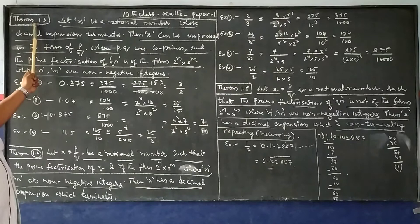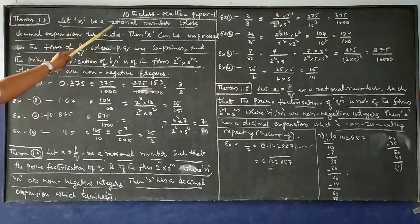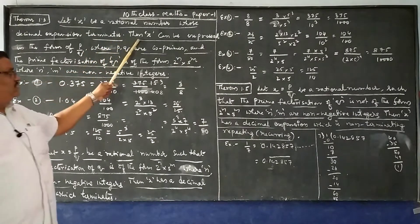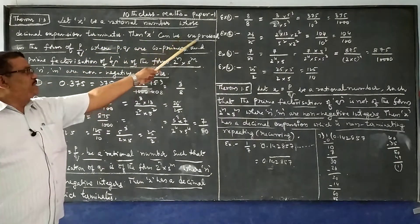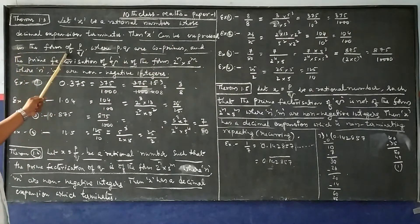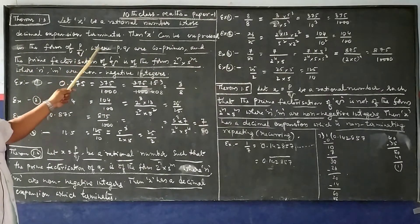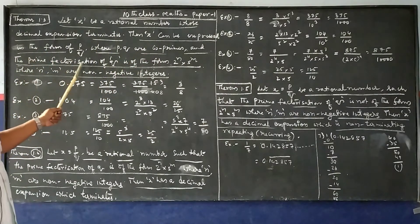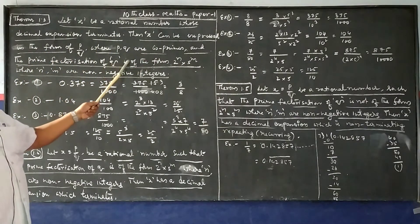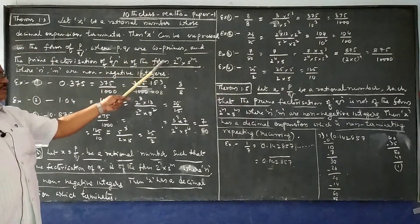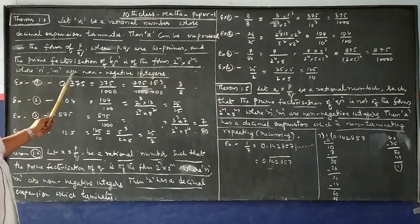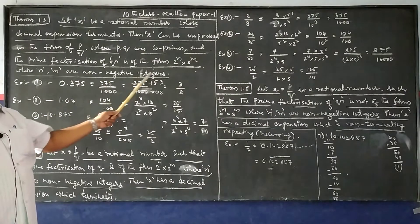Theorem 1.3: Let x be a rational number whose decimal expansion terminates. Then x can be expressed in the form of p by q, where p and q are co-primes and the prime factorization of q is of the form 2^n × 5^m, where n and m are non-negative integers.